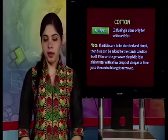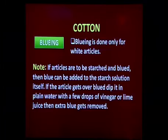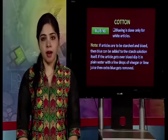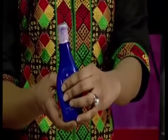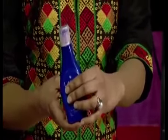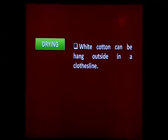After stiffening, you do bluing of the fabric. Usually white color cotton fabrics are treated with it. Bluing is only done on white articles like white kurta pajama, white dupatta, etc. If the articles are to be starched and blued, blueing can be added to the starch solution itself. If the article gets over-blued, dip it in plain water with a few drops of vinegar or lime juice to remove the extra blue.